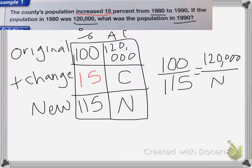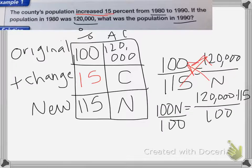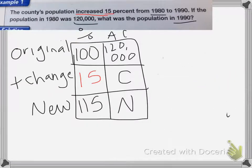So it's going to be 100 over 115 equals 120,000 over n. Now I'm going to do cross products. So I end up with 100n equals 120,000 times 115. Divide both sides by 100. I'm going to just erase them so I have more room.